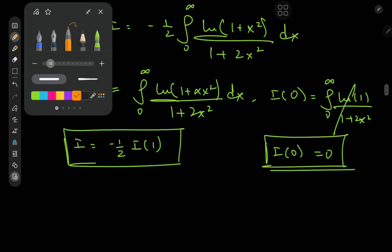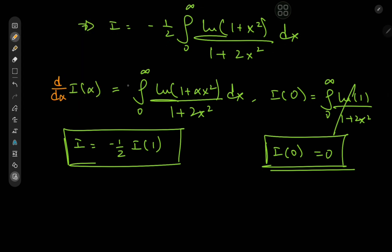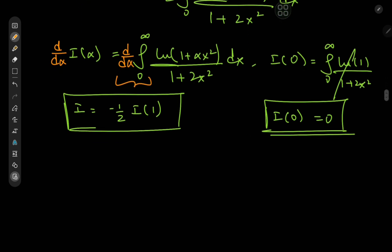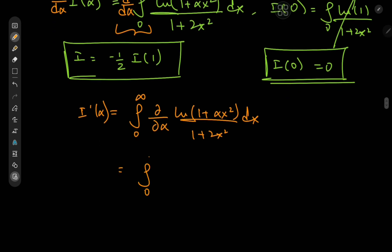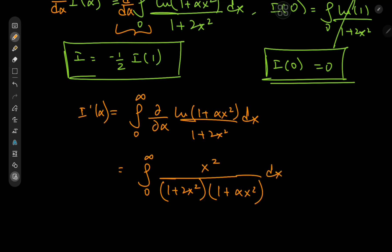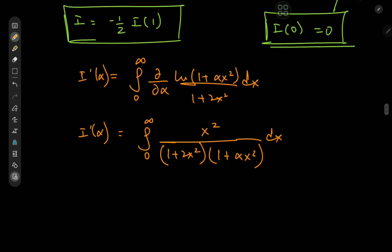We now differentiate the integral function with respect to α. Switching the order of integration and differentiation, we get the integral from 0 to ∞ of the partial derivative with respect to α of log(1 + αx²)/(1 + 2x²) dx. Since (1 + 2x²) is constant with respect to α, the derivative of the log gives the reciprocal of the argument, and differentiating αx² with respect to α yields x². So I'(α) = ∫₀^∞ x²/[(1 + αx²)(1 + 2x²)] dx.